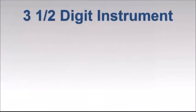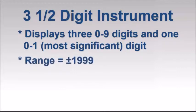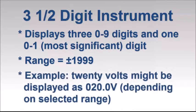For example, a so-called three-and-a-half digit instrument can display either a one or zero as the most significant digit. Thus, the highest reading this multimeter can display within a single measurement range is 1999. Readings greater than this must be displayed in a higher range, if available. For instance, a reading of 20 volts could be displayed as 020.0 volts, with a decimal point shifted one digit to the right.